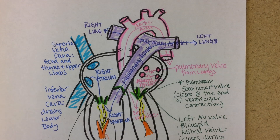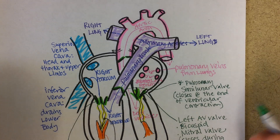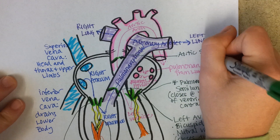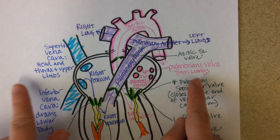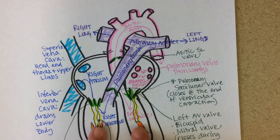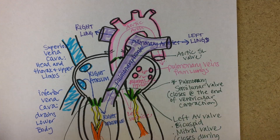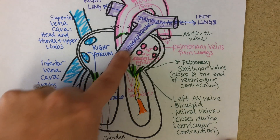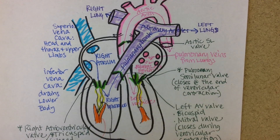Many blood vessels branch off along the way. Before blood enters the aorta, it passes through the aortic semilunar valve, which closes at the end of ventricular contraction, just like the pulmonary semilunar valve. Blood is pouring into both sides of the heart at the same time, going down into both ventricles, and going out both exiting arteries simultaneously. The right side sends blood to the lungs to get oxygenated, while the left side sends oxygenated blood to the head, neck, arms, thorax, abdominal cavity, and lower legs.